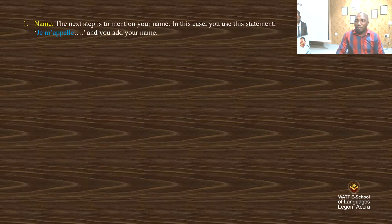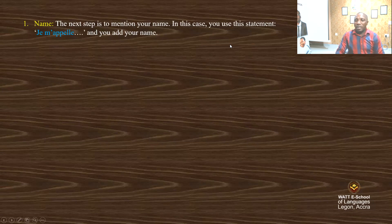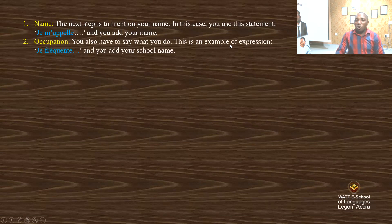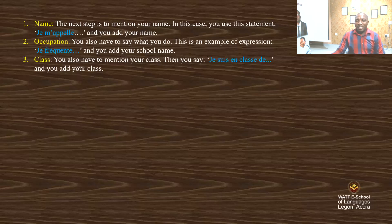Now we continue with the name. The next step is to mention your name — use the statement 'Je m'appelle' and add your name. Then mention your occupation. Since you are a student, you say 'Je fréquente' and add your school name — for example, 'Je fréquente What is School of Languages.' You also have to mention your class by saying 'Je suis en classe,' for example 'Je suis en classe deux,' 'cinquième,' 'sixième,' or 'sixième deux.'